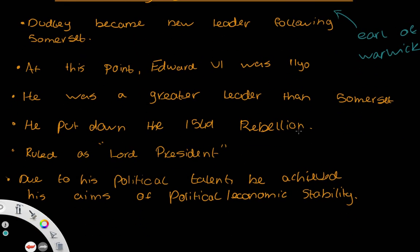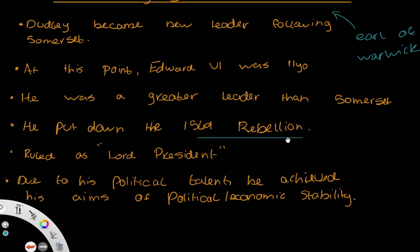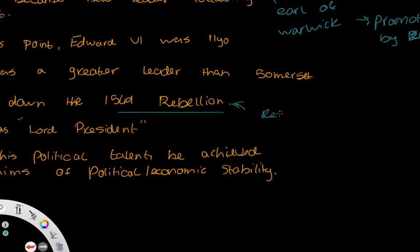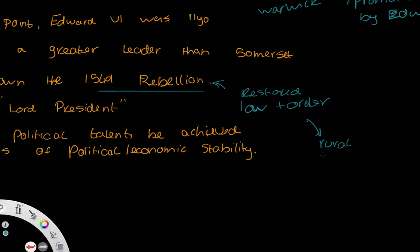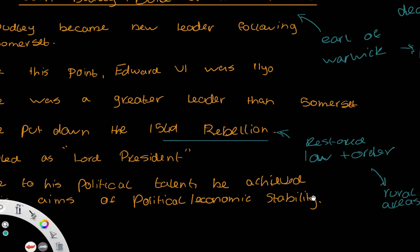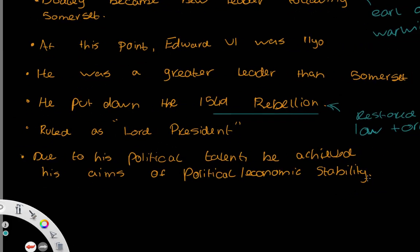Northumberland was able to put down the 1549 rebellion and restore law and order — specifically in the rural areas of England, where the majority of the rebellion had begun. This allowed him to be promoted almost as the Lord President by Edward. Bear in mind, Edward at this point is only 11 years old and he dies at the age of 16, so he's only got a few more years left of his life and his reign.